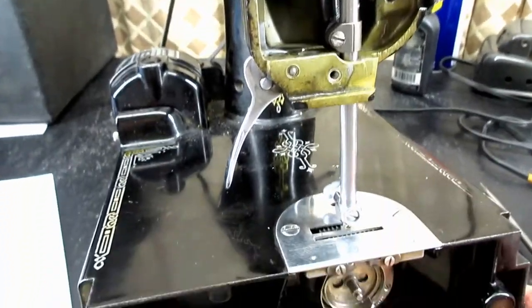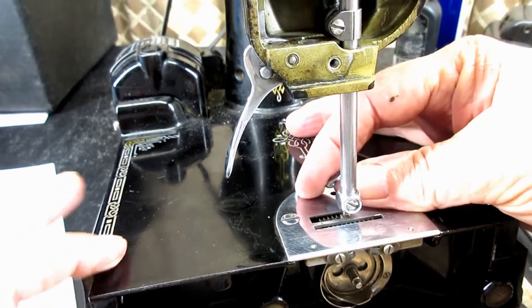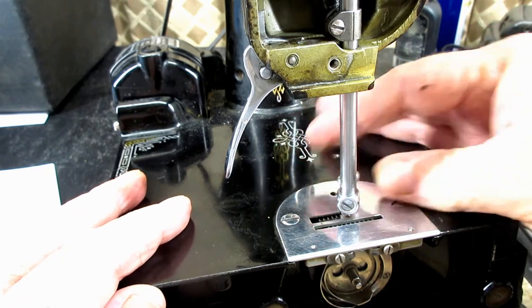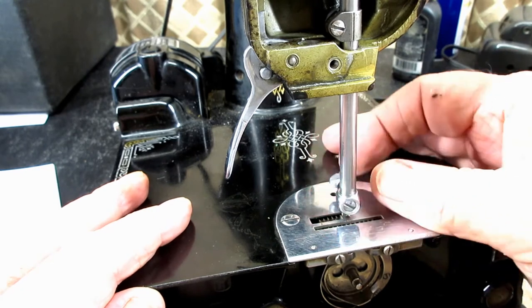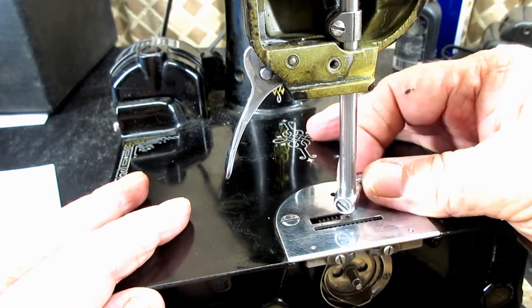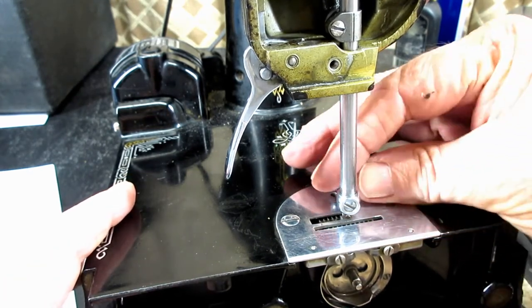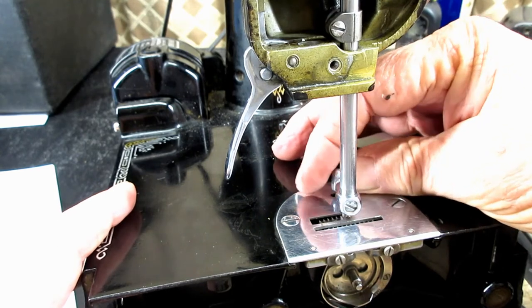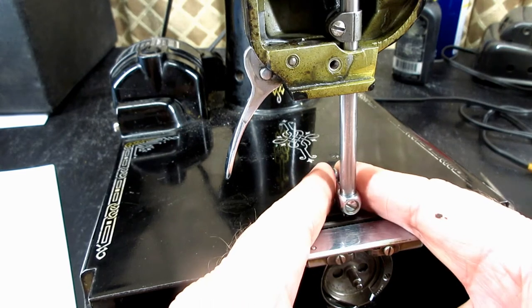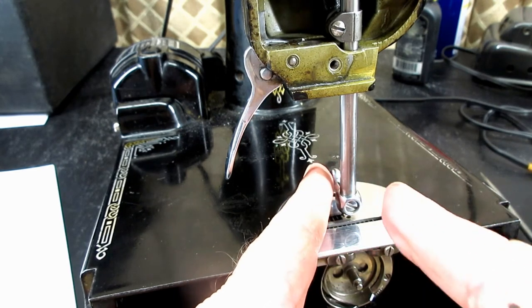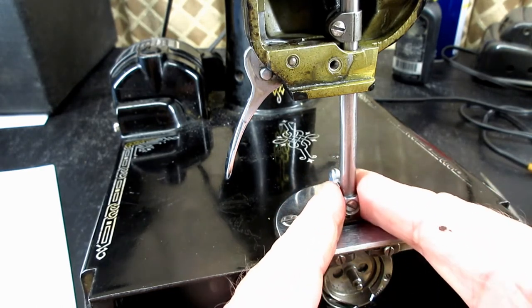When you're setting the height, you also have to set the position of the bar so that it faces right to the front. You don't want it turned one way or the other because that'll turn the eye of your needle away from the hook when the hook's coming by. You can look at the sides of the needle clamp, you can look at the set screw.